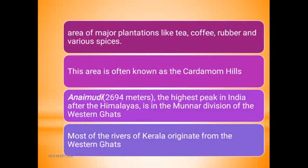Now we have the emergence of plantations — tea, coffee, rubber and various spices. Tea and coffee are major crops here. This area is also called Cardamom Hills. This is part of the Eastern Highlands.